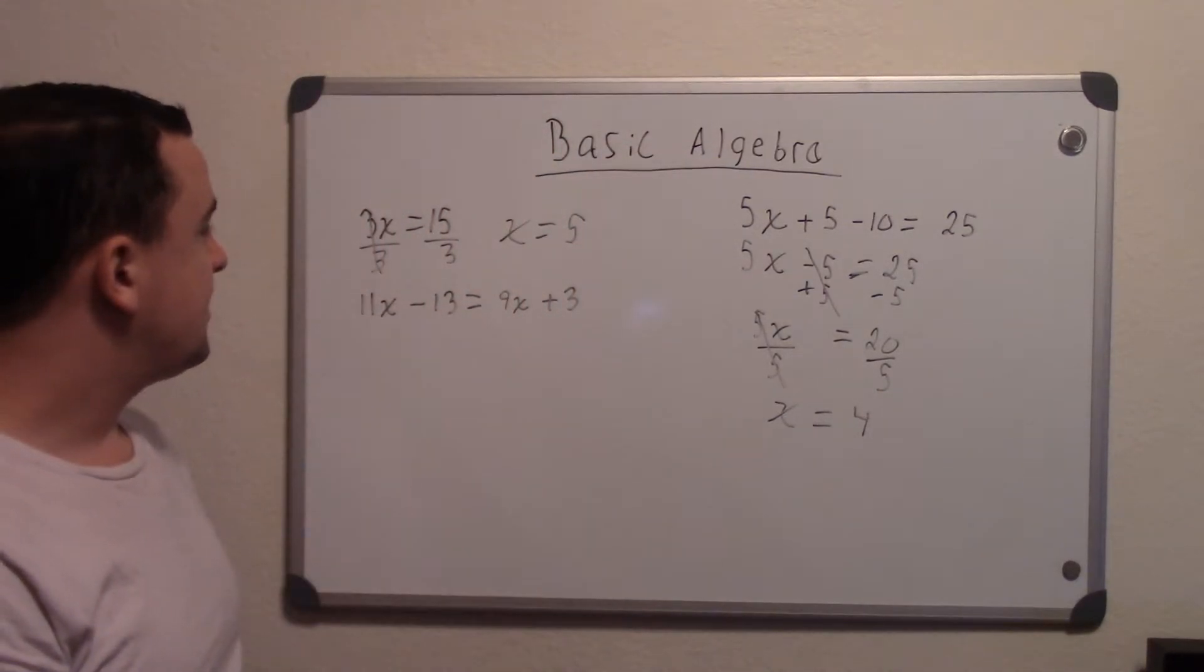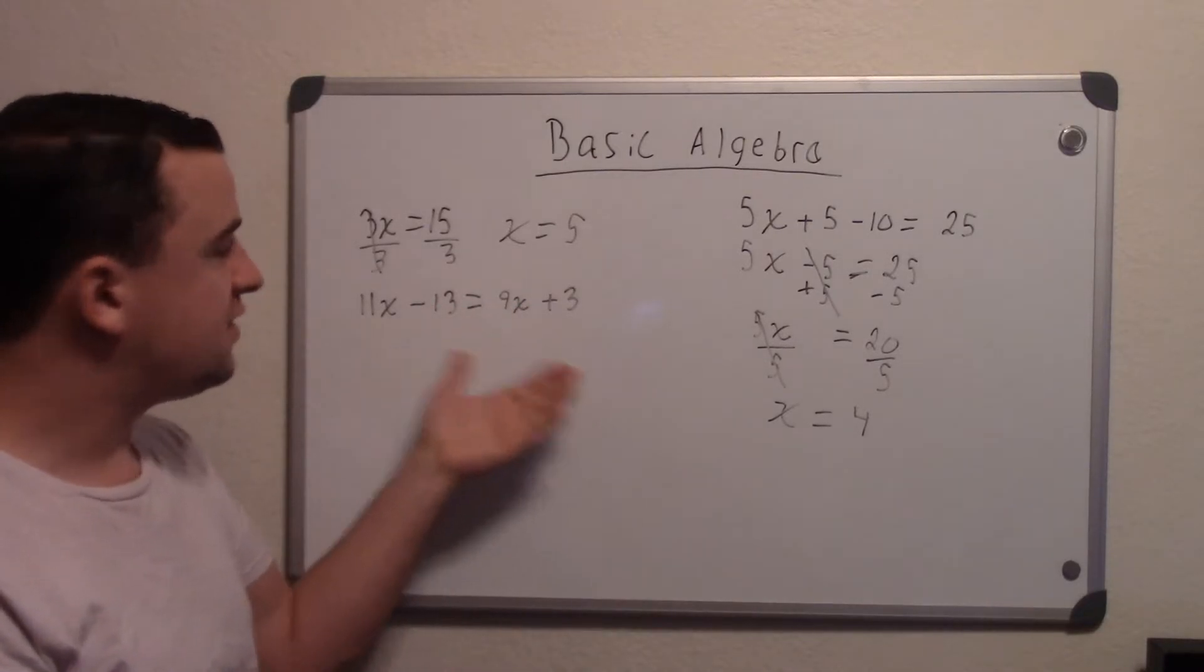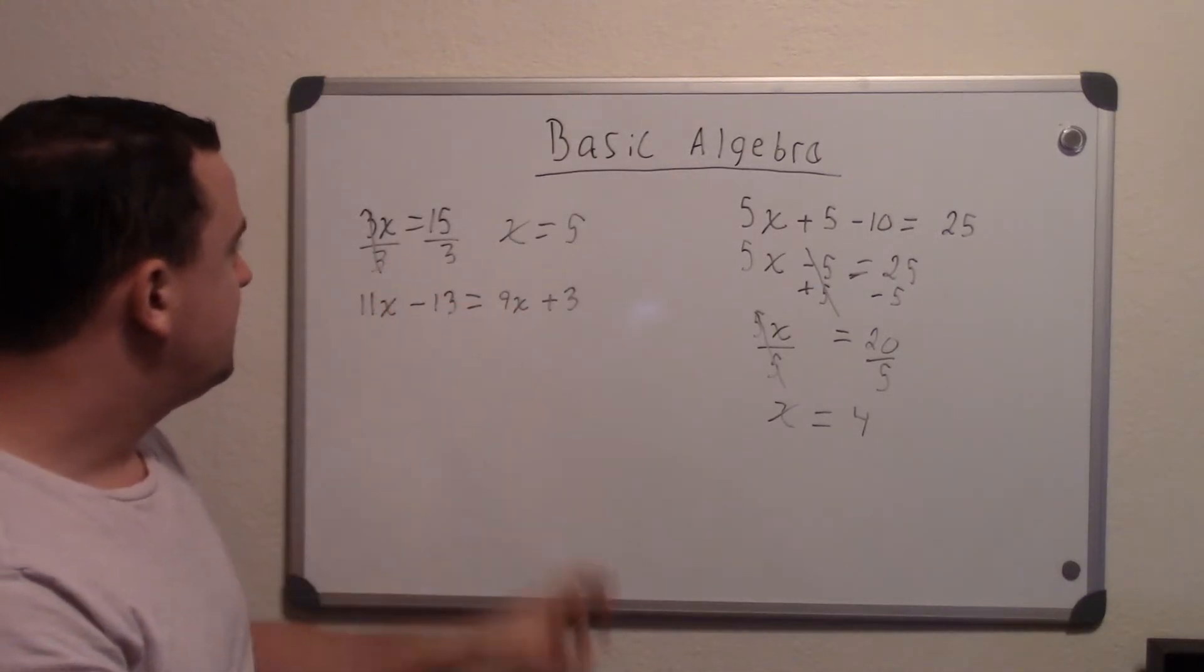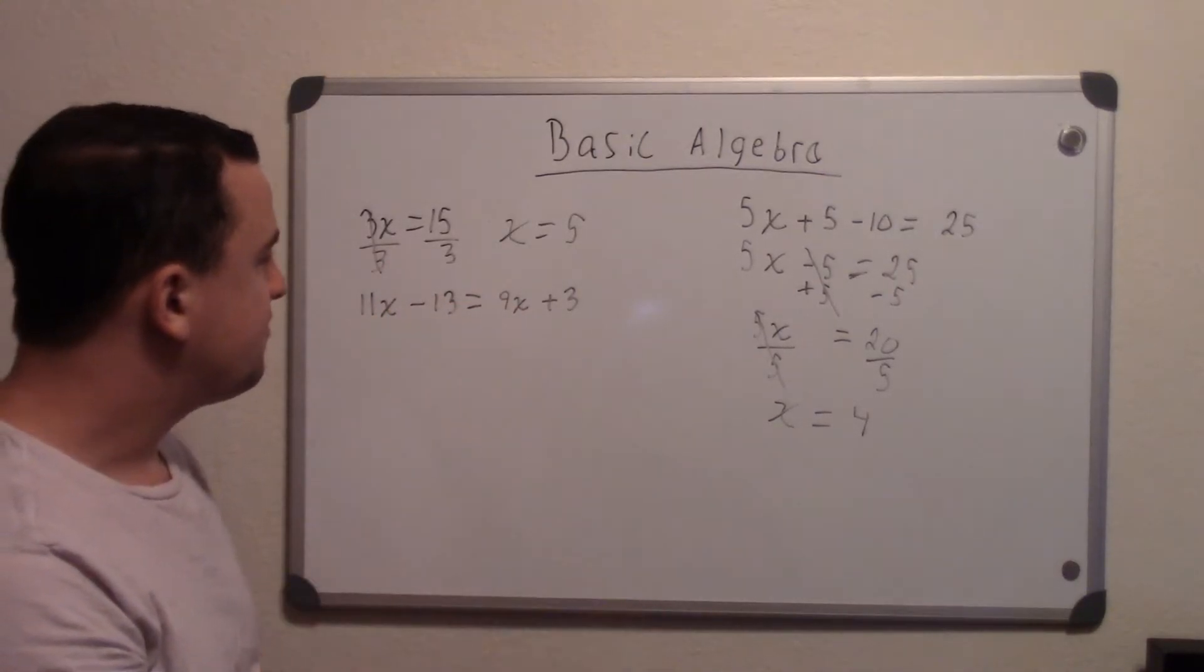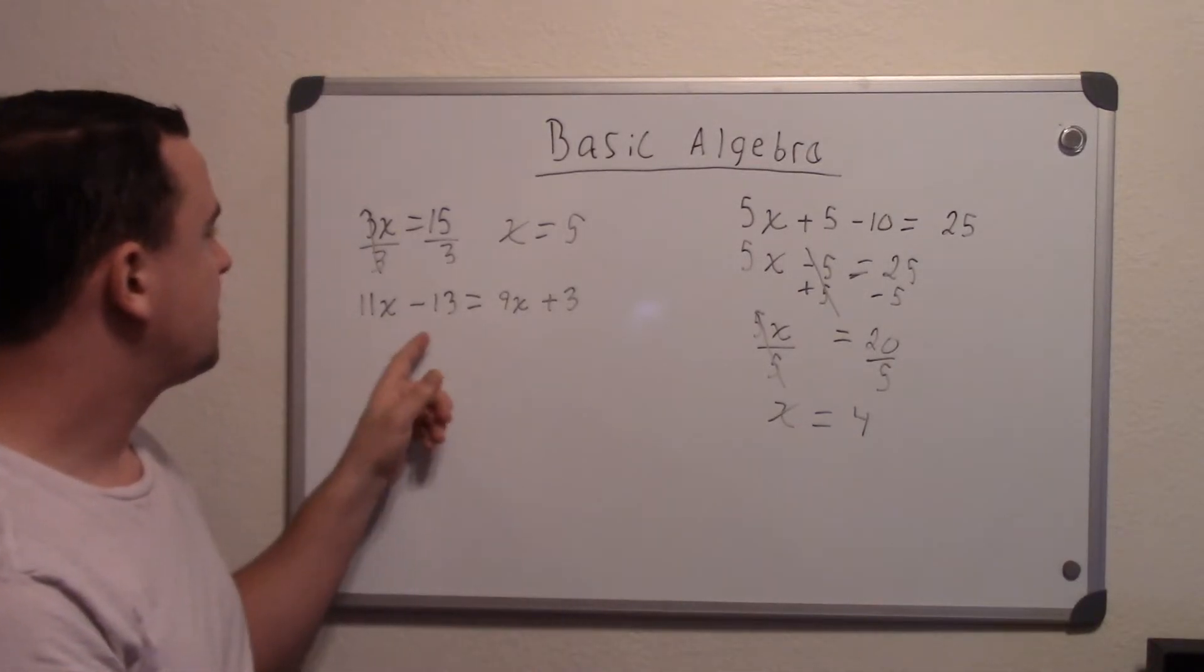Then we have one more example. Sometimes they may look like this. You may get x's and whole numbers on both sides. And again, like I said before, just get the x's on one and the whole numbers on the other. Sometimes people like to do it all at once. I like to do it one by one just to make sure I don't make a mistake or anything like that.